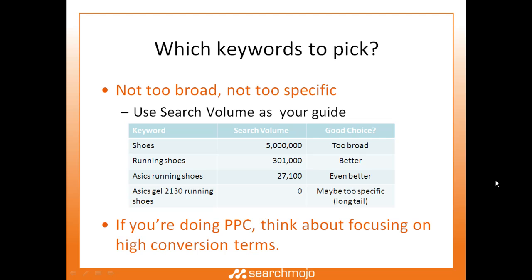The next phrase, 'running shoes,' with 301,000 searches, is a better choice even though it has less search volume, because it brings more targeted traffic — you want to attract people looking for running shoes, not just any shoe. 'ASICS running shoes' is even better: with 27,100 searches it's significantly less, but people searching specifically for ASICS running shoes are likely to visit your site if you're ranked well, making it a highly targeted term.